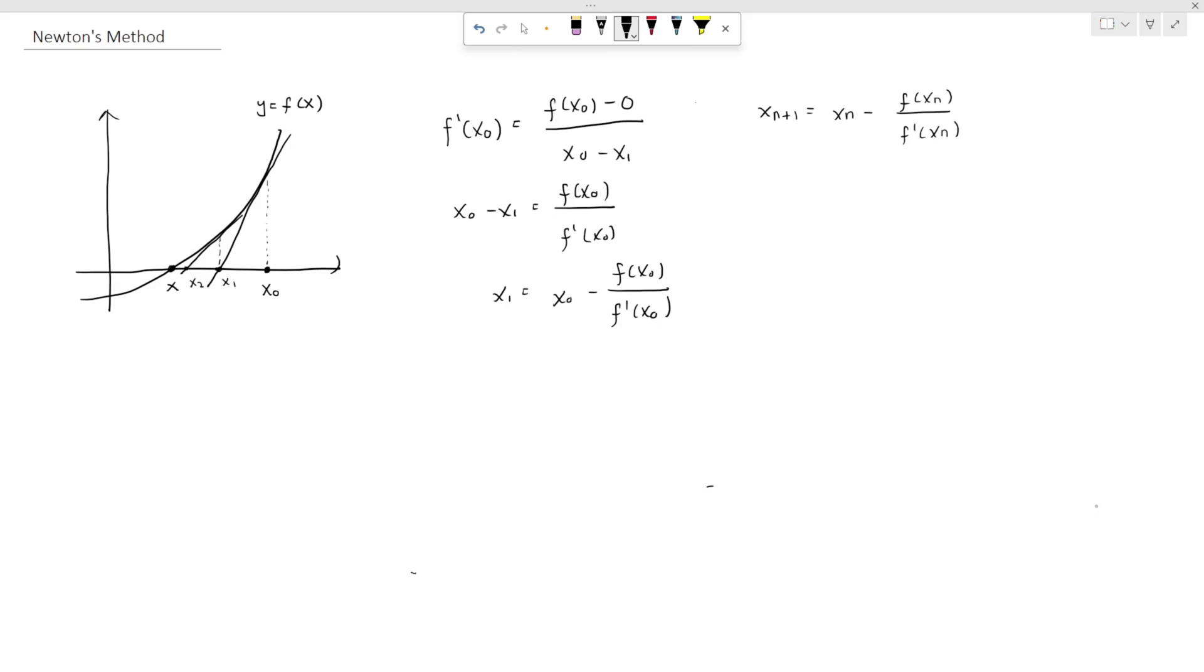Then, how to use this formula to approximate, let's say, square root of a? Finding the square root of a is basically the same thing as finding the roots of x squared minus a.